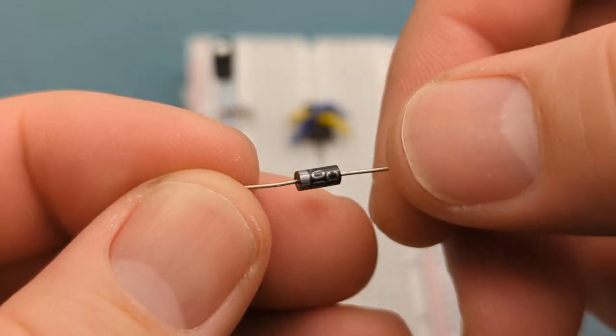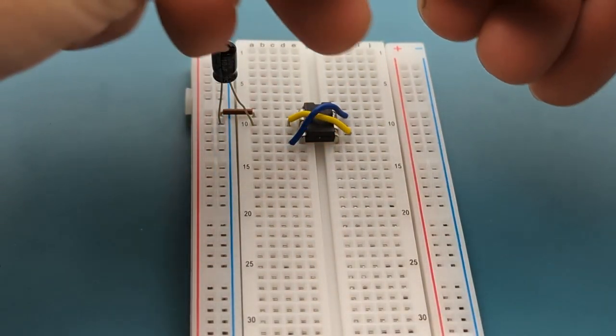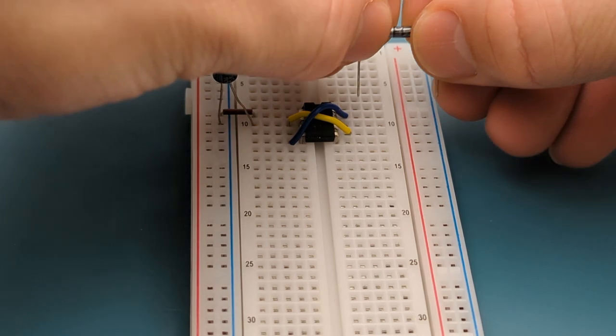Insert a 1N4007 diode into pin 8 or VCC and the positive rail. Insert the cathode into pin 8.